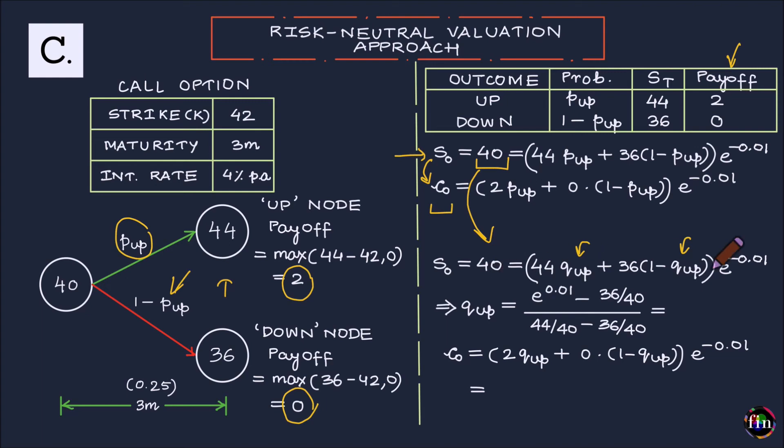So if I were to rearrange this equation and calculate the Q up, it comes to this. It is e to the power 0.01 minus 36 over 40 which is the multiplicative factor which I multiply my current stock price with to arrive at the stock price in the down node. See, it's 36 over 40.